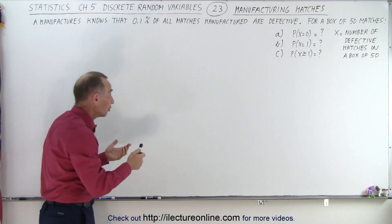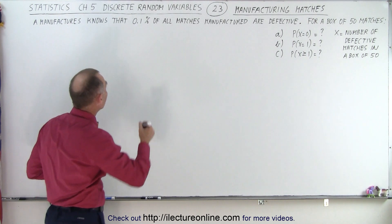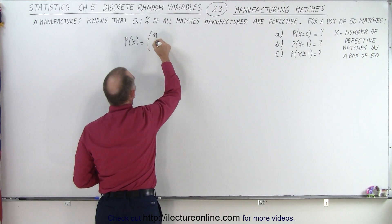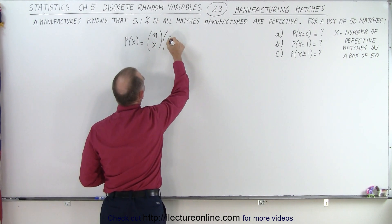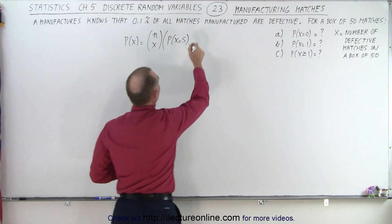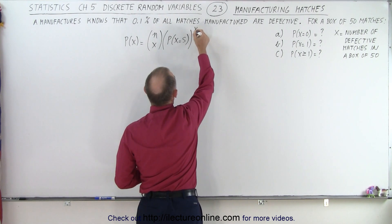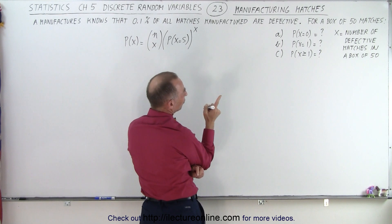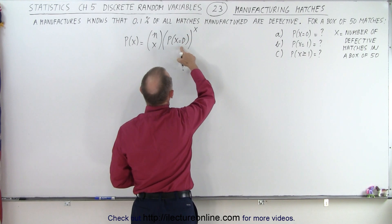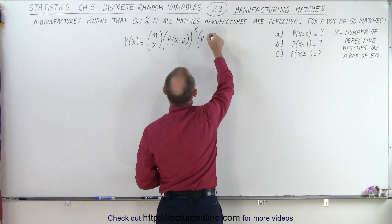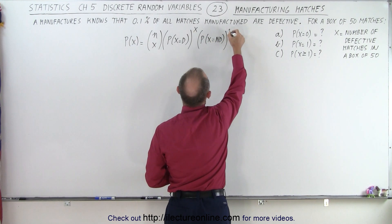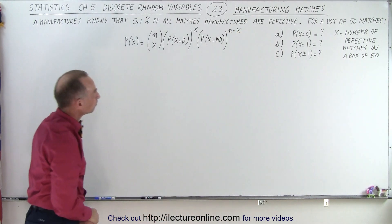We need the equation for binomial distribution and a binomial random variable: P(x) is equal to n-choose-x times the probability that x equals a success — in other words, no defect — raised to the x power. If we let x be the number of defective matches, then we multiply by the probability that x is not defective, raised to the n minus x power.